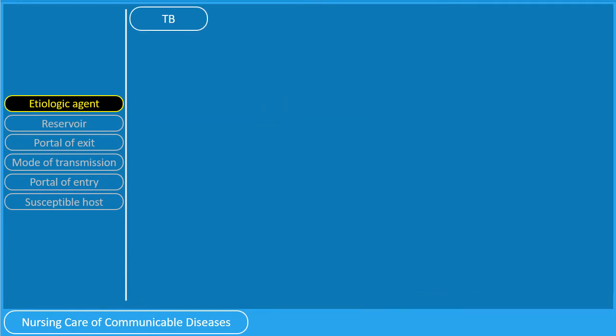Let us apply the chain of infection to one of the most common diseases found in the Philippines: tuberculosis. What is the etiologic agent of TB? If you answered Mycobacterium tuberculosis, you are correct.